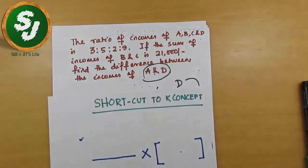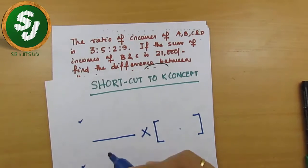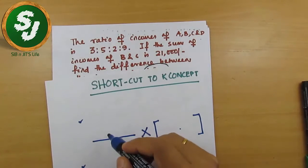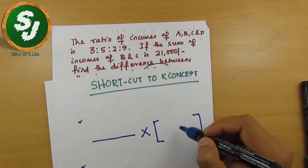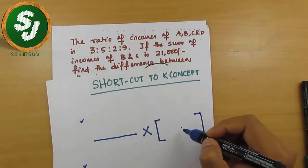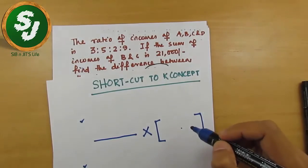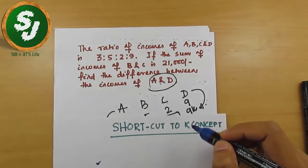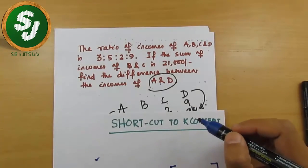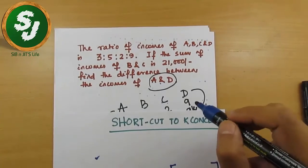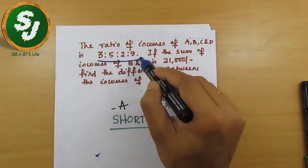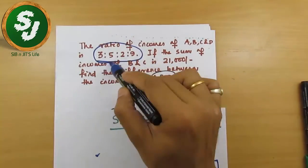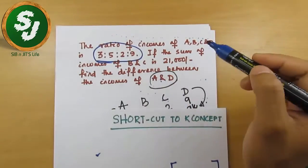You should clearly know what should be written in the numerator part, what should be written in the denominator part, and what number should be written here. If you closely look into this question, notice how the question is framed — in the first part they give information about ratio.